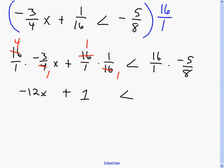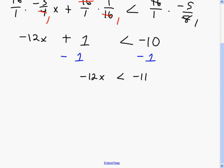Now back to standard steps: subtract 1 from both sides, giving negative 12x is less than negative 11. Then divide both sides by negative 12. Since I divided by a negative number, my inequality reverses — that less than becomes greater than. Negative 11 divided by negative 12: a negative divided by a negative is positive, giving x is greater than 11/12. I can't reduce 11/12 any further, so that's my final answer.